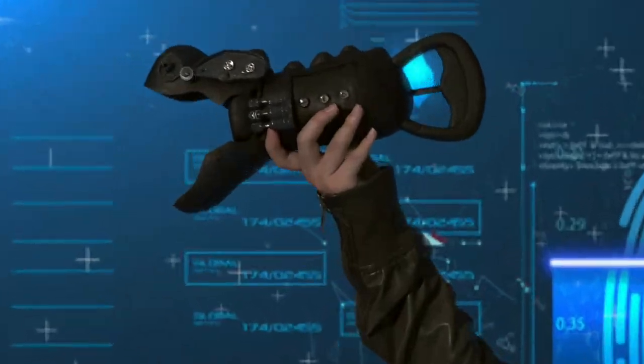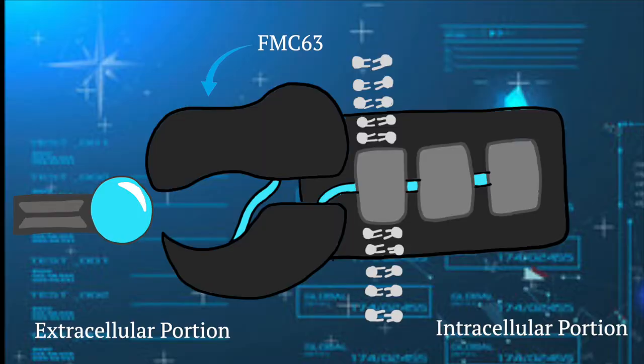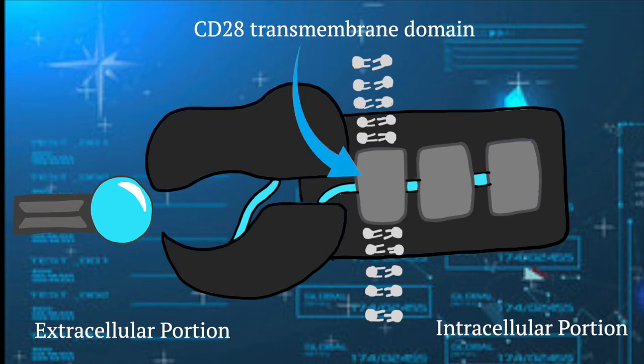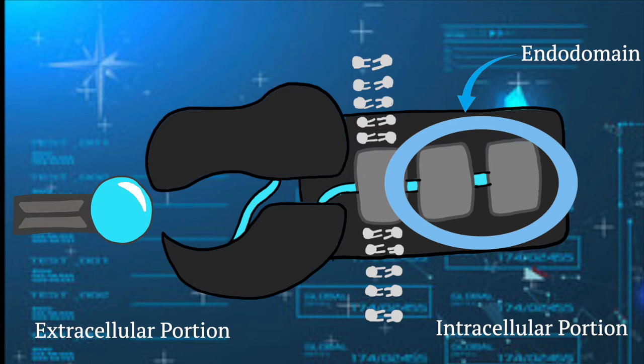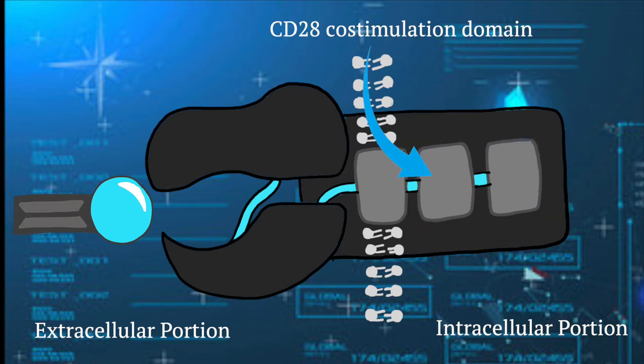Here's how to use your CAR. Attach the FMC63 single chain fragment variable, or the binder, to CD19. The binder is attached to the CD28 transmembrane domain, which is attached to the endodomain. The endodomain consists of the CD28 co-stimulation domain and CD3Z.